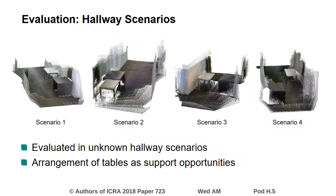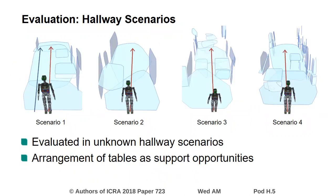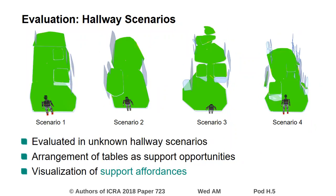We evaluated our approach in four unknown scenarios which resemble hallways with different arrangements of tables as available support surfaces. The robot is intended to travel along the hallway while utilizing support affordances if available. After the process of visual affordance detection, affordance-belief functions highlight areas for which supporting contact with the robot's end-effectors is possible.